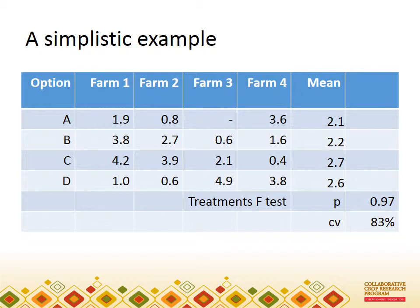The p-value for the test is large. And the CV — the coefficient of variation, which is the residual standard deviation as a percentage of the mean — is huge at 83%. But you don't need these statistics to see the problem; just look at the data. There is no consistency in the differences between yields of each treatment across farms. For example, treatment A does well on farm 4, but poorly on farms 1 and 2.